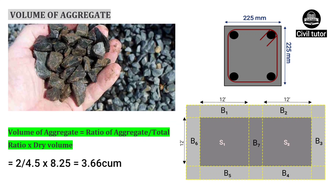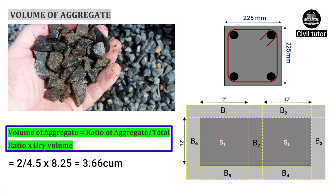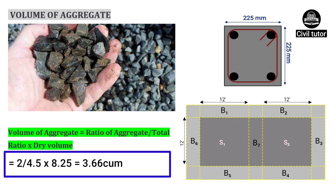Finally, we need to calculate the volume of aggregate, which is given by ratio of aggregate upon total ratio, into dry volume. Ratio of aggregate is 2, total ratio is 4.5, and dry volume is already calculated as 8.25. So on substituting these values, volume of aggregate required will be equal to 3.66 cubic meters.